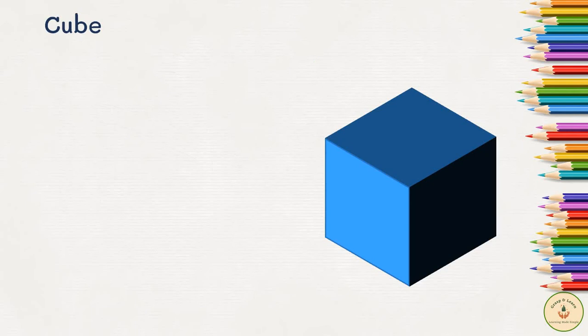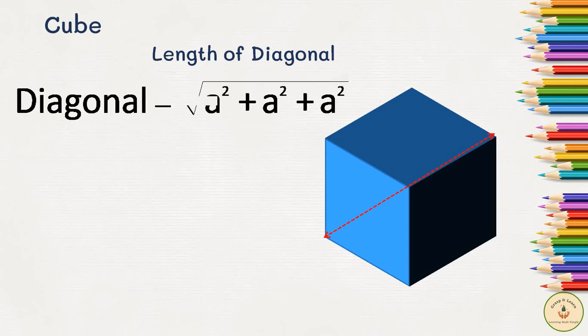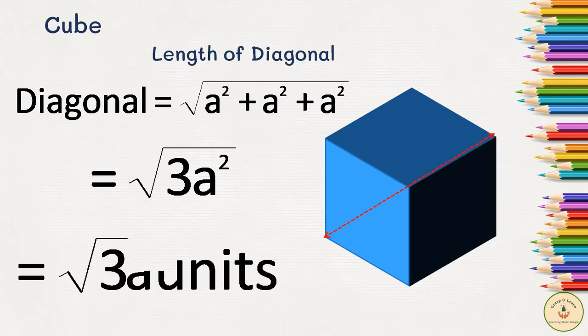Now last is length of diagonal of a cube. Diagonal is calculated as square root of sum of squares of all its dimensions. For the cube, all the dimensions—that is length, breadth, and height—are all equal to 'a'. So the formula becomes √(3a²). Now a² when comes out of the square root becomes 'a', then the final formula becomes √3 × a units. We have just used 'units' here because we are talking about the length of the diagonal, so we need not use cubic or square in the unit.